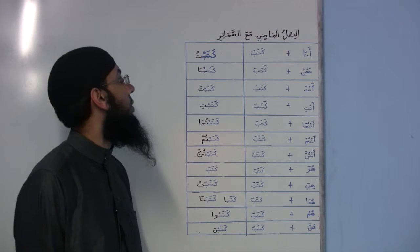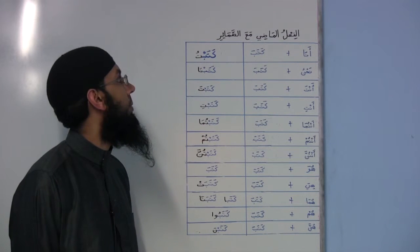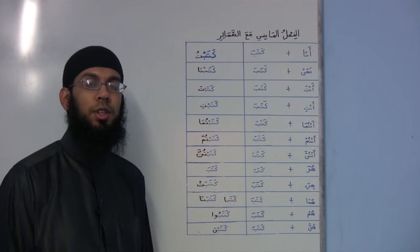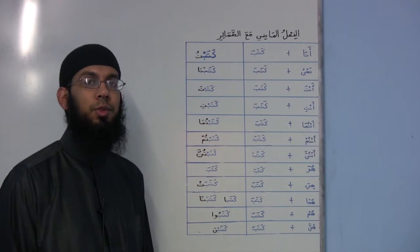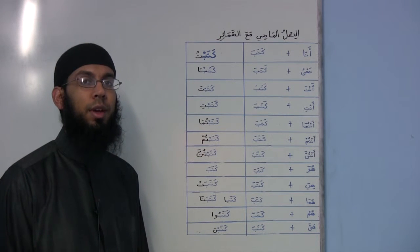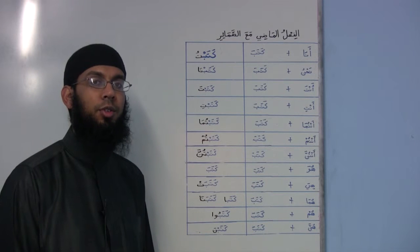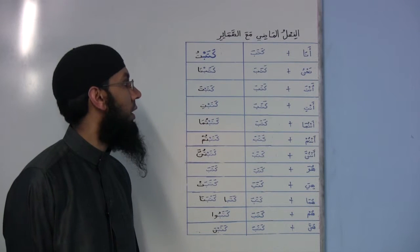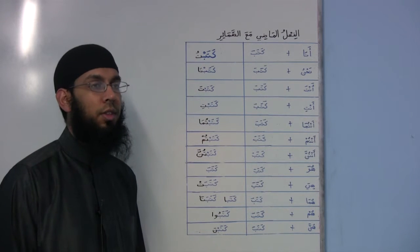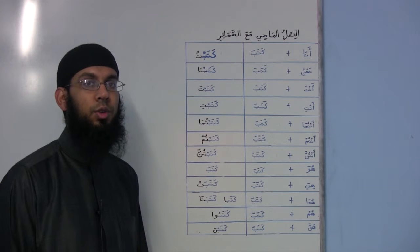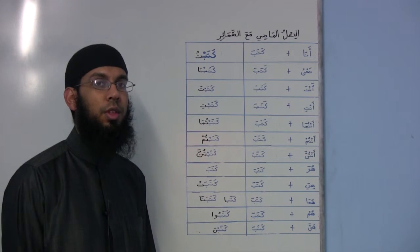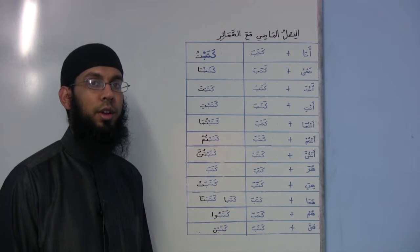الفعل الماضي مع الضمائر — the past tense verbs with the pronouns. Now we are going to learn how to manipulate the past tense verbs. Instead of being restricted to the verbs we get in the book, for example 'kataba' meaning 'he wrote,' I want you to know how to adapt this verb to 'I wrote,' 'they wrote,' 'we wrote,' and so on and so forth.